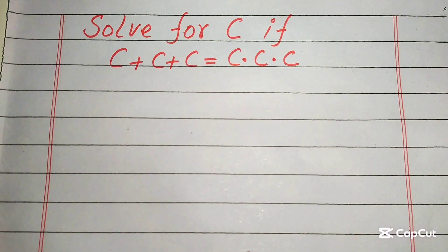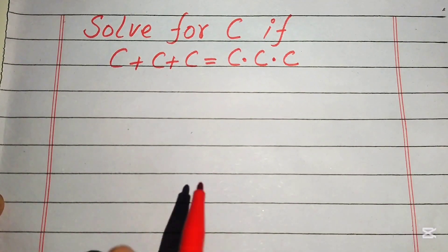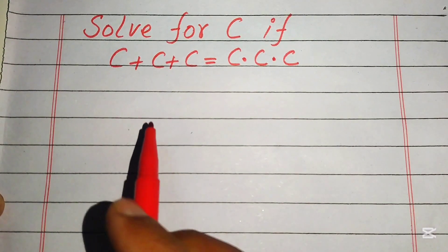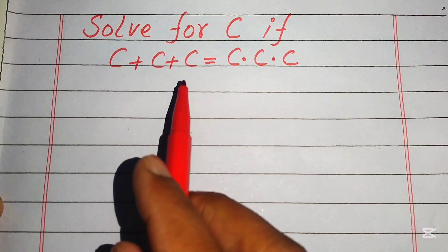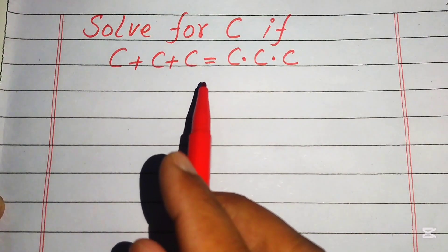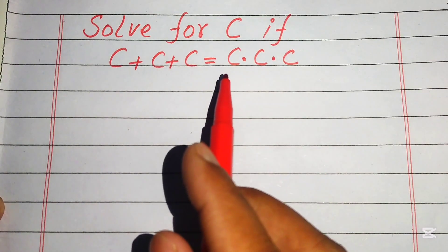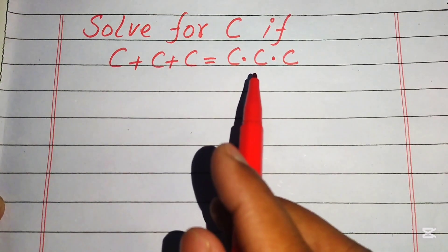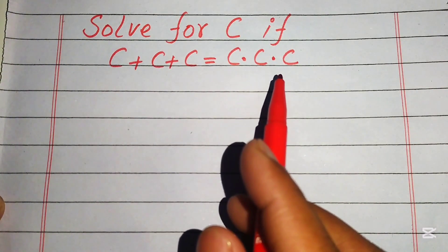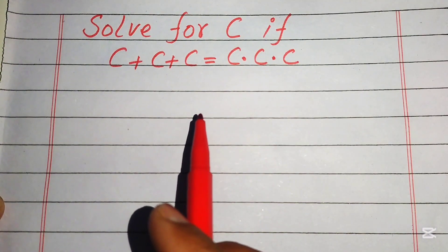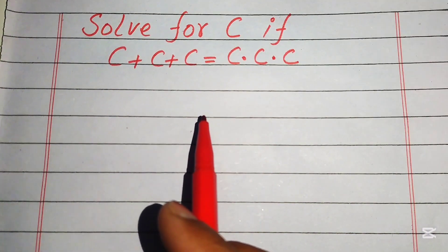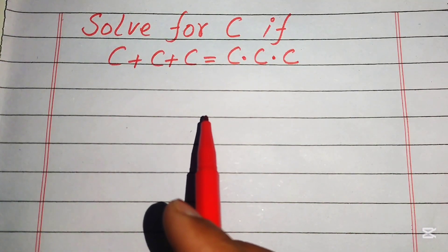Hello everyone, welcome. We solve this math olympiad algebra problem: c plus c plus c equals c times c times c. We solve this problem for the values of c.